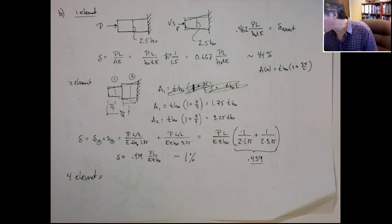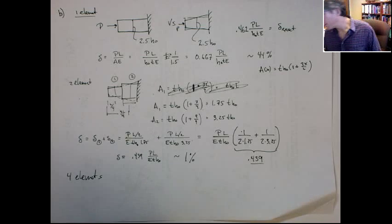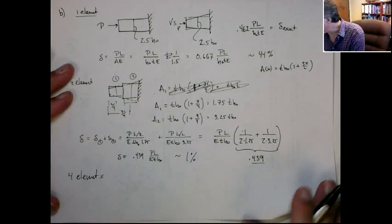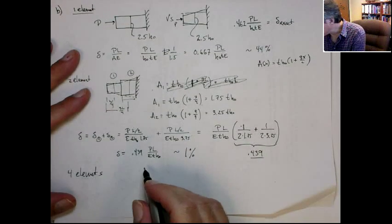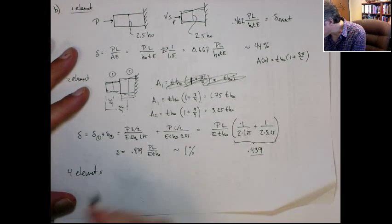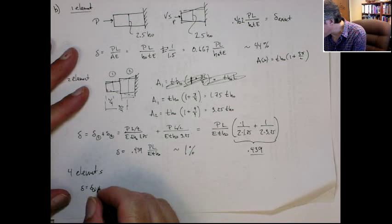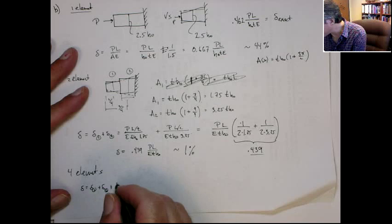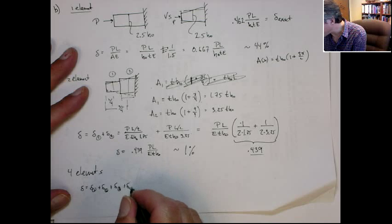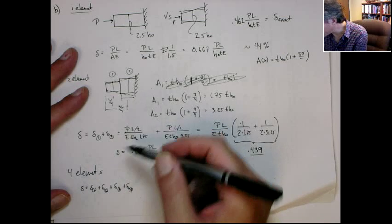All right, so if we're doing the four element problem, what you can see you get out of all these things is the delta of the first element plus the second element plus the third element plus the fourth element. And you can see they're all going to pull out this common term.